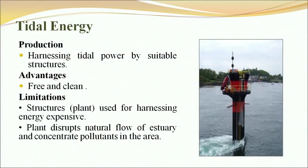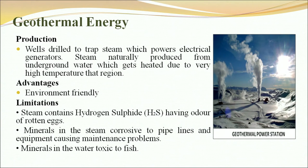Tidal energy is produced by harnessing tidal power using suitable structures. Its advantage is that it is free and clean, but limitations include expensive structures for harnessing energy, and plants disrupting the natural flow of estuaries and concentrating pollutants. Geothermal energy is produced from wells drilled to trap steam that powers electrical generators, with steam naturally produced from underground water heated by very high underground temperatures. Its advantage is being environment friendly, but limitations include steam containing hydrogen sulphide with the odour of rotten eggs, minerals in the steam being corrosive to pipelines causing maintenance problems, and minerals in the water being toxic to fish.